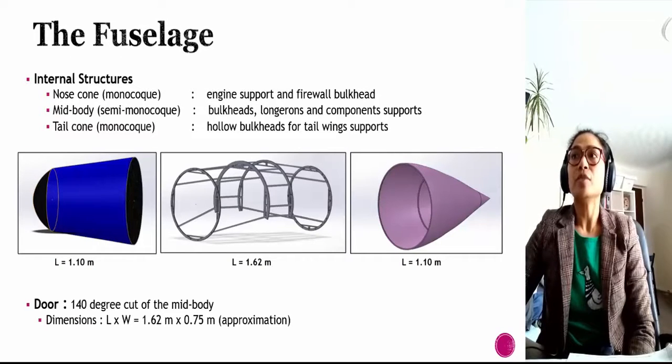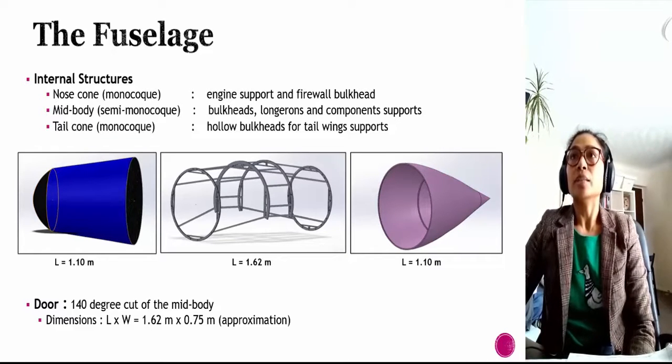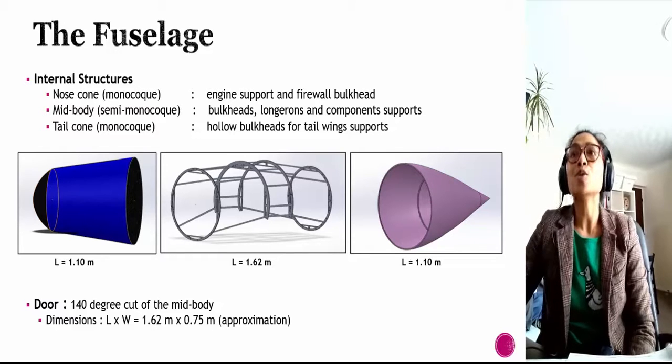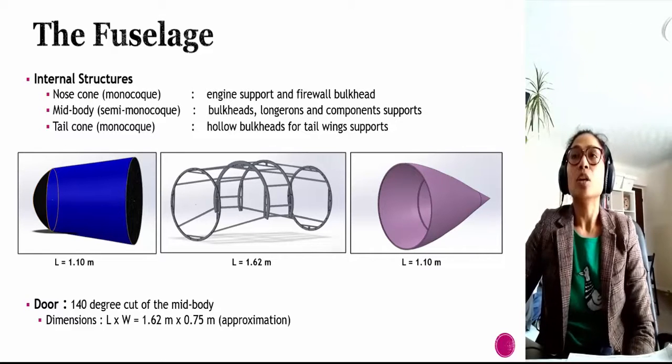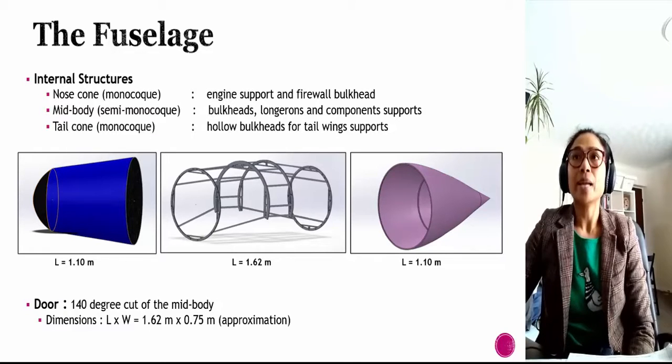The fuselage structure will be manufactured in three different parts. The nose cone is monocoque structure. The fully closed bulkhead in the nose cone area is multifunctional. Other than engine support, it also acts as a firewall to prevent the engine from overheating the medical payload during flight.